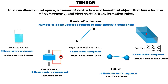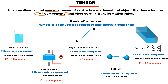This definition states there will be m to the power n components for n indices. Let's verify this in three-dimensional space. A scalar has rank zero — that means 3⁰ = 1 component. A vector has rank one — that means 3¹ = 3 components. Stress is a rank-2 tensor — that means 3² = 9 components. Piezoelectricity is a rank-3 tensor with 27 components, and stiffness is a rank-4 tensor with 81 components.